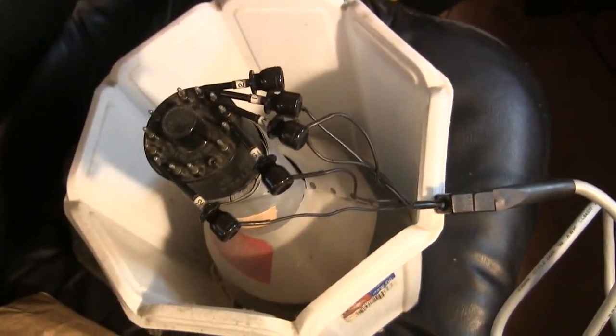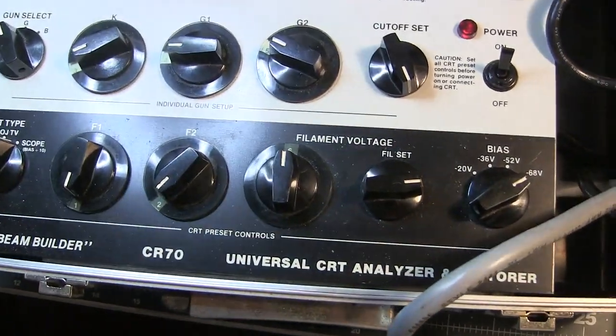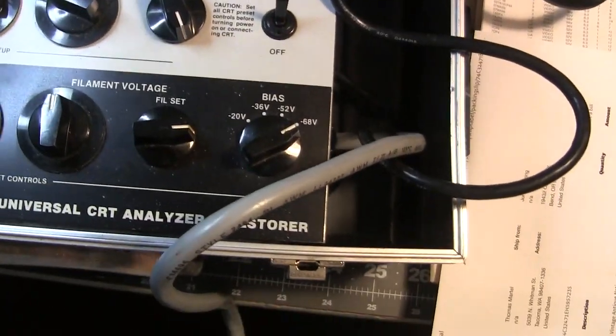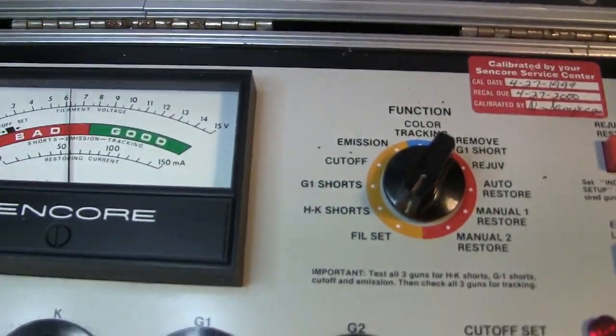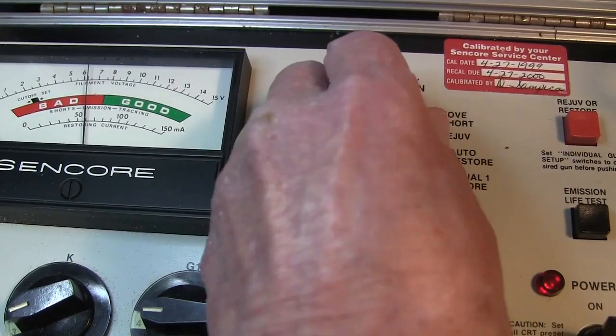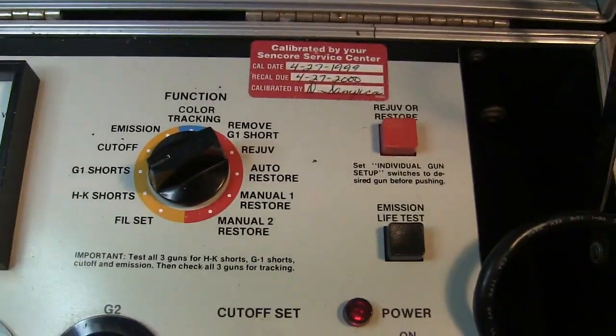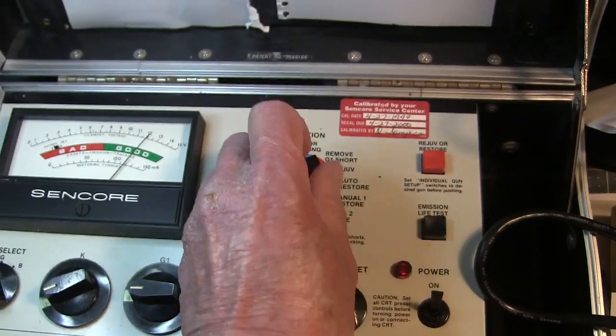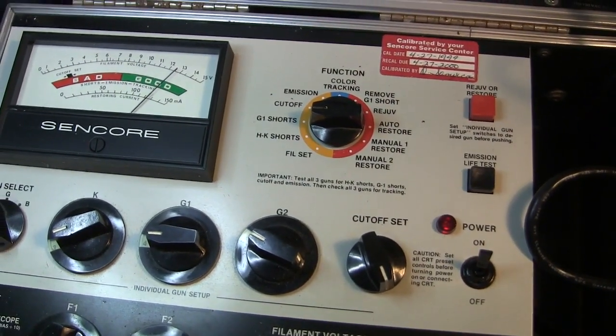Here's one of my spare tubes connected to the CR70 Sencore. I've got the filament set for 6.3 volts. When I go to HK Shorts, it tests good, and G1 Shorts also tests good.